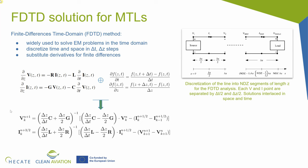FDTD can be applied also to transmission line theory — that's actually the way we have implemented a solution for transmission lines. The concept is the same: we discretize time and we discretize space. In this case, instead of discretizing a 3D domain, we are discretizing a one-dimensional domain, which is the direction along the wire. And in the same fashion, we substitute the derivatives for the finite difference equivalent. What you can see on the right is the discretization of a typical multi-conductor transmission line. Instead of having electric and magnetic fields, our solution is for the voltage and current, which are also interleaved in space and time.